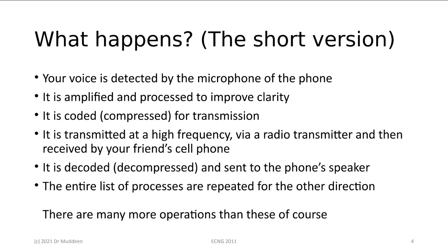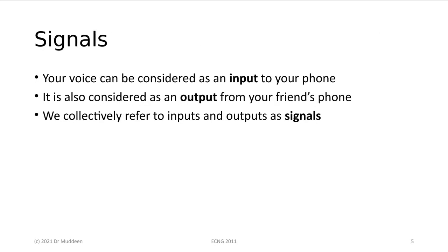That is the short version — there may be a hundred other things that happen — but in a broad context, that is what would happen in a call from one person to another. On the input side, we consider your voice to be an input to the phone, and we call that a signal. At the other side, what your friend is hearing is your voice, and that's an output. So these things that go in and come out — most cases electrically — are what we call signals.